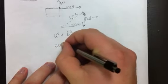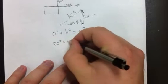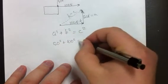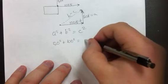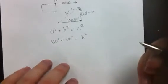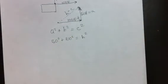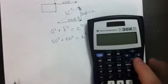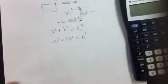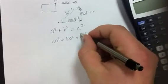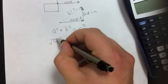We take 50 and square it, plus 100 squared, is equal to the hypotenuse squared. So, on our calculator, actually what we'll do first is we'll take the square root of both sides, so we can do this all in one step on our calculator.